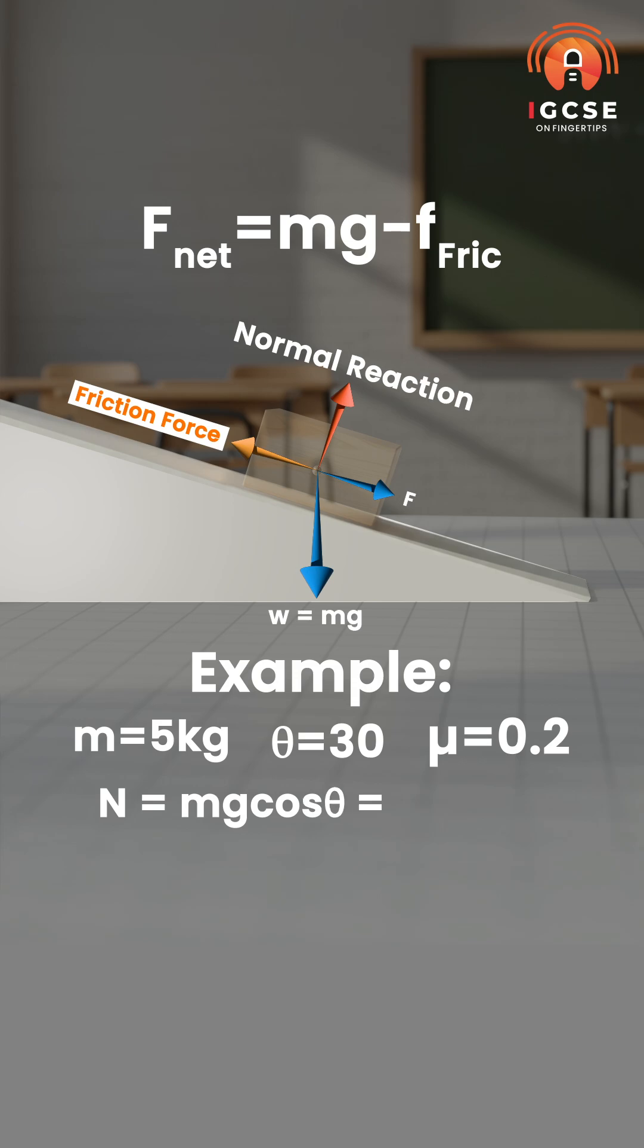n equals mg cos theta. Friction equals mu into n. Then a equals total force over the mass.